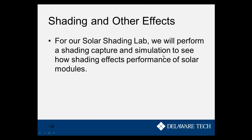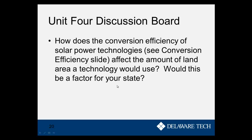We'll also take into account how shading affects solar panels — from trees, chimneys, and other obstructions. On the last day of class, we'll do a lab showing how real solar engineers go out in the field and calculate shading. Finally, there's a discussion board question: how does the conversion efficiency of solar power technologies affect the amount of land area they would use, and do you think this would be a factor in your state?